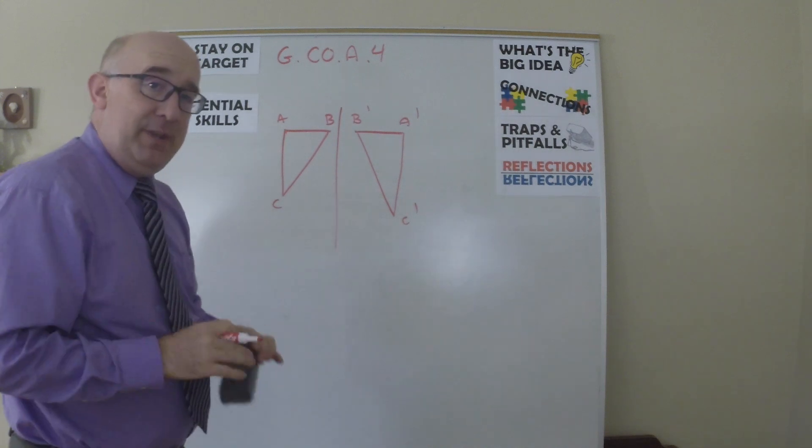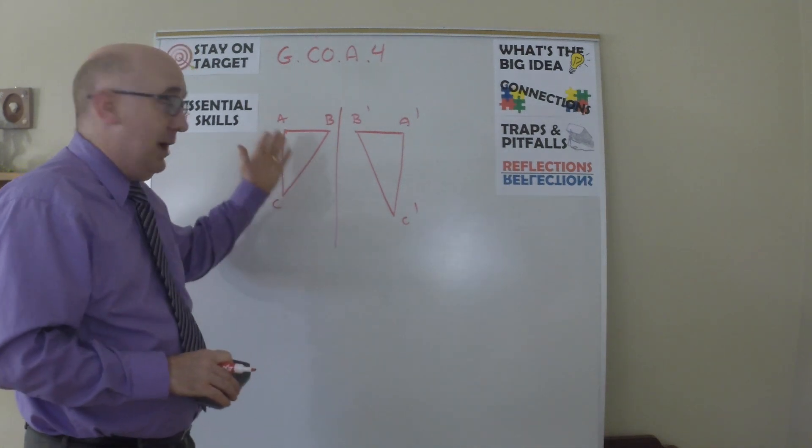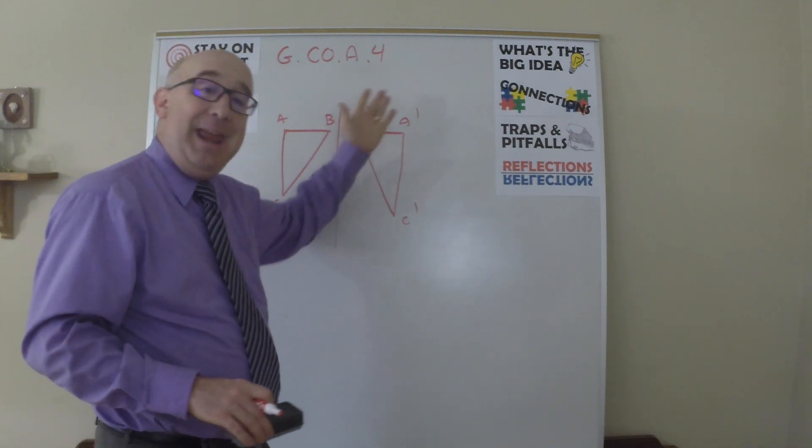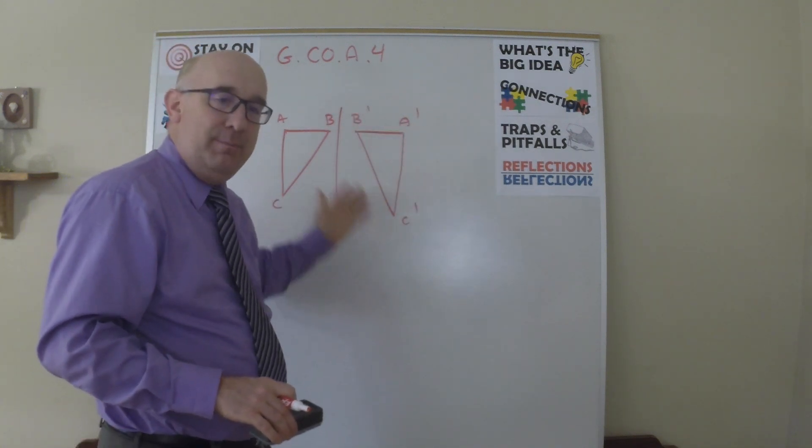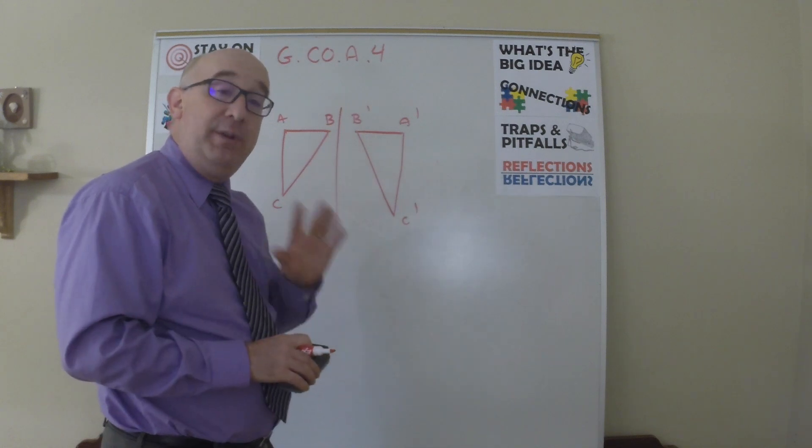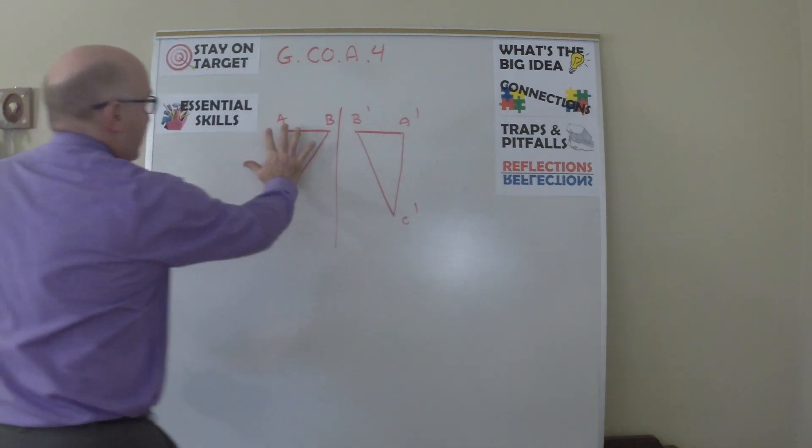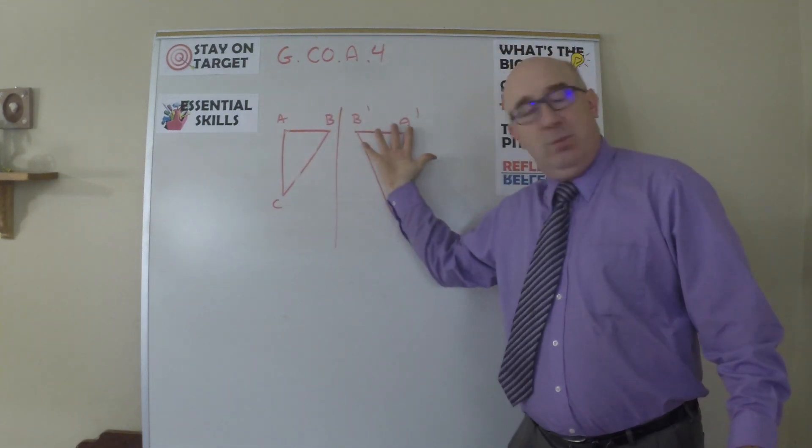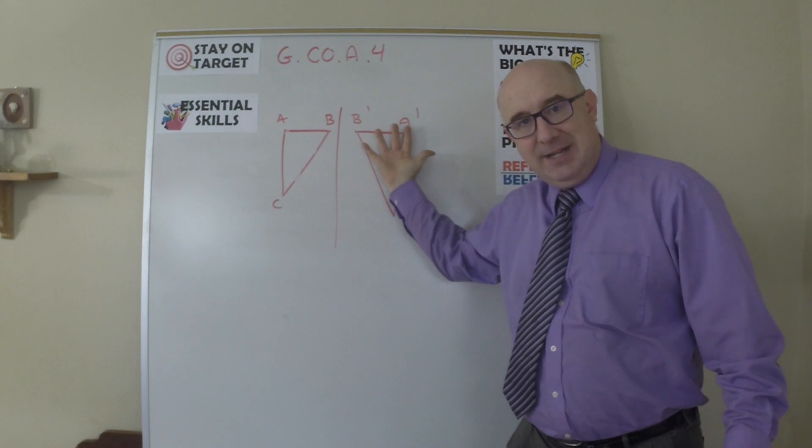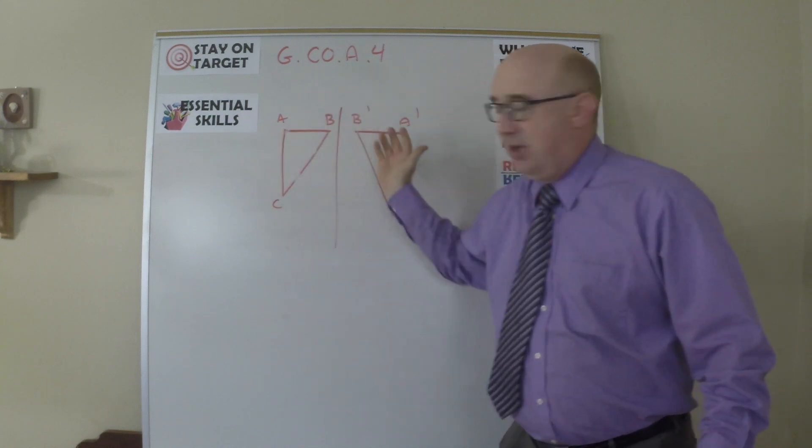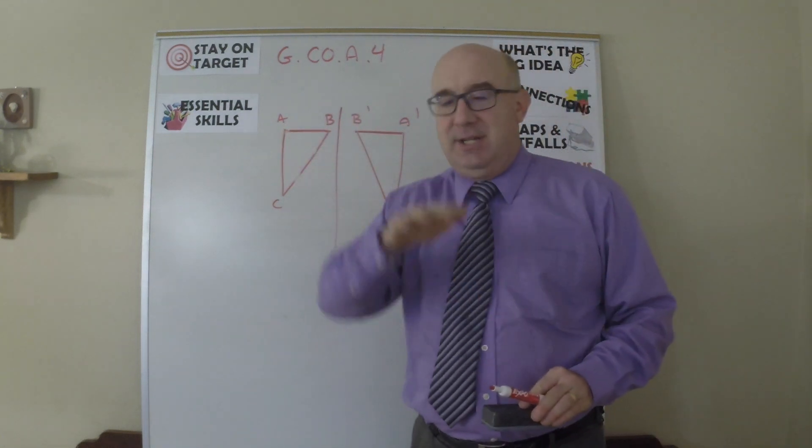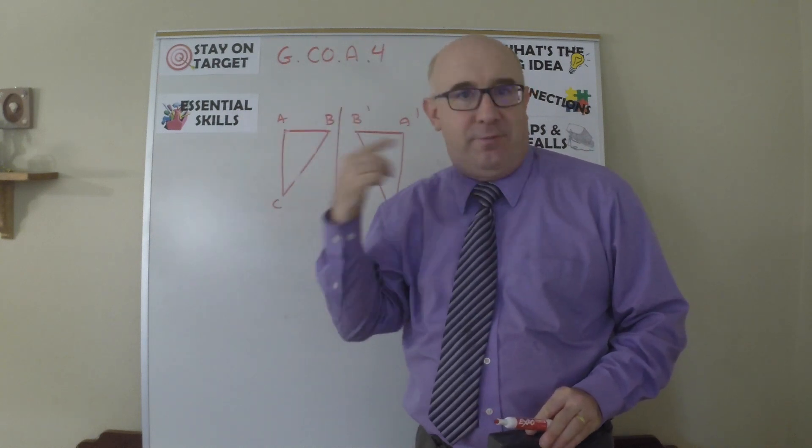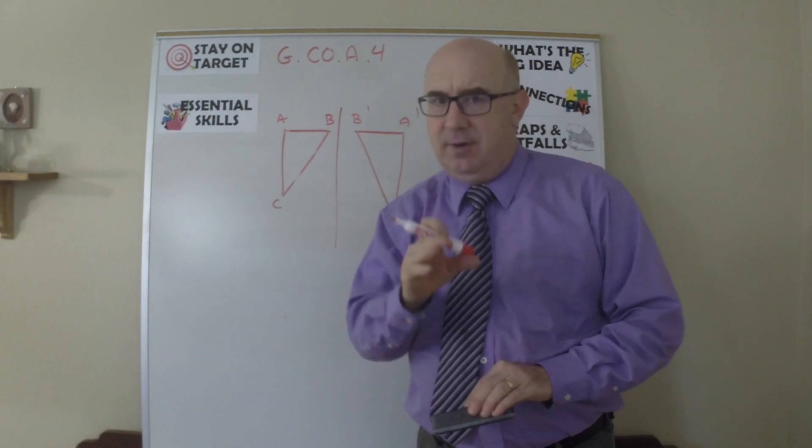And notice something that's happened here. Here, ABC clockwise is its naming convention. Here, A prime, C prime, B prime—notice a reverse. What has happened is we took the back of my hand and we reflected it, and we're looking at the palm of my hand. Those orientations are different. The reflection is the only transformation that leaves the plane to perform its task. Be careful of that.